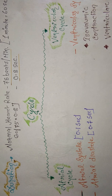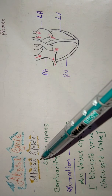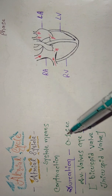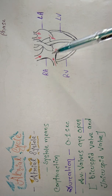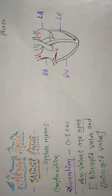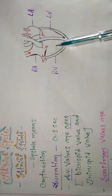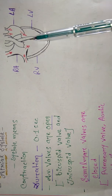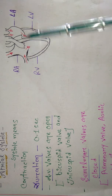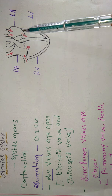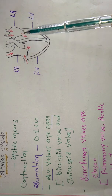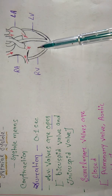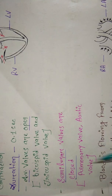Now let's focus on the atrial cycle. Atrial systole: the atrium is contracting, pushing blood into the ventricles, for 0.1 second. During this time, the AV valves — atrioventricular valves, meaning the bicuspid and tricuspid valves — are open, giving passage for blood to flow from the atria into the ventricles.